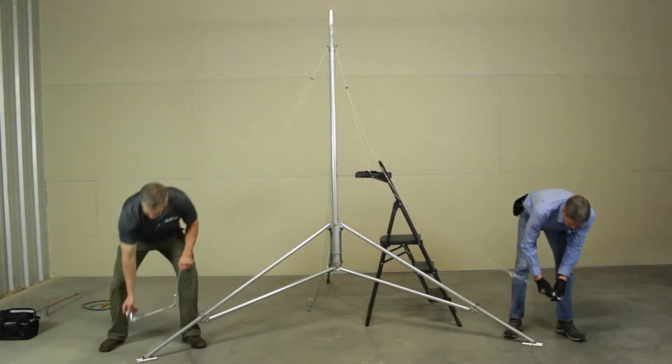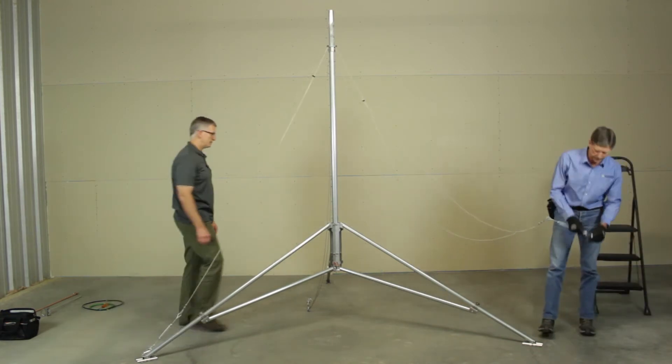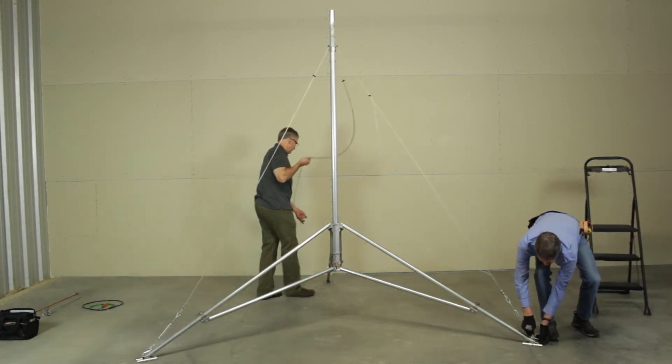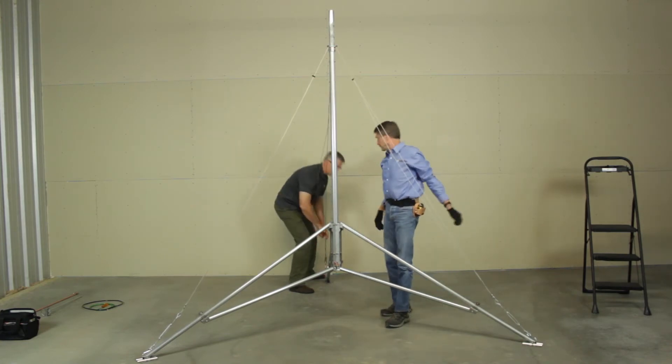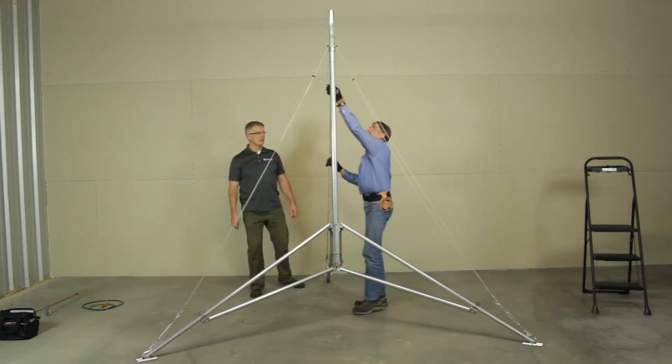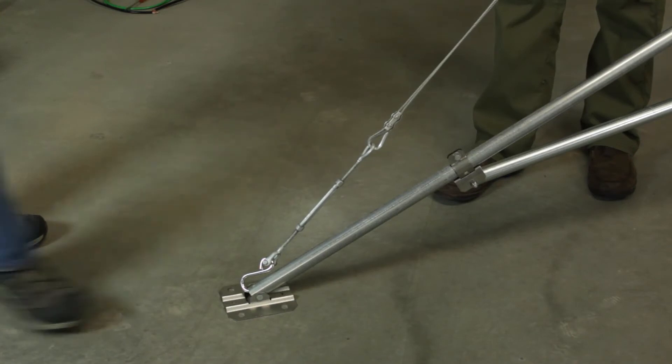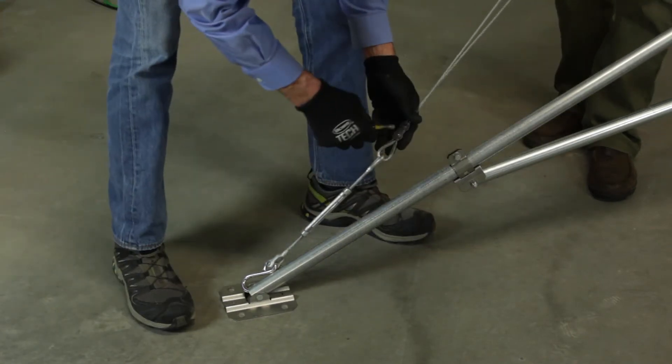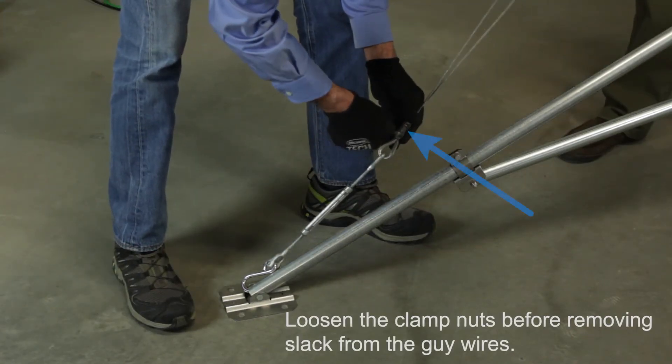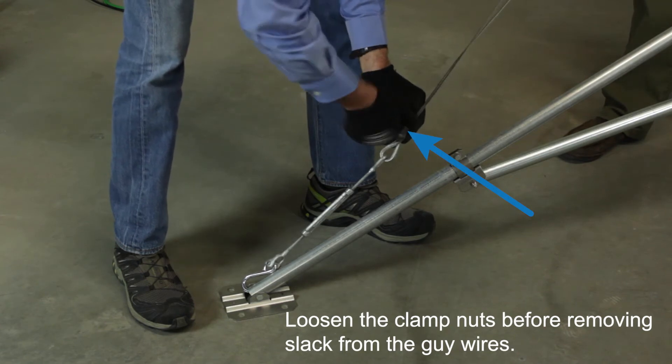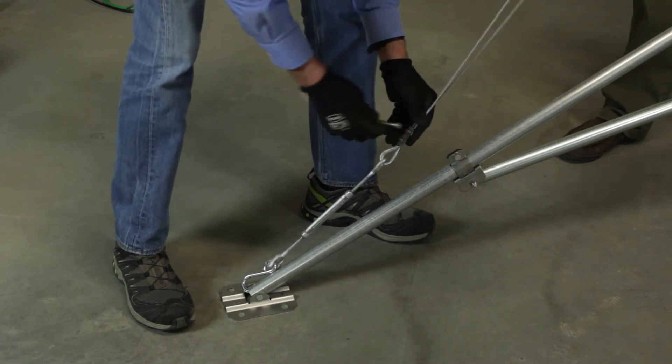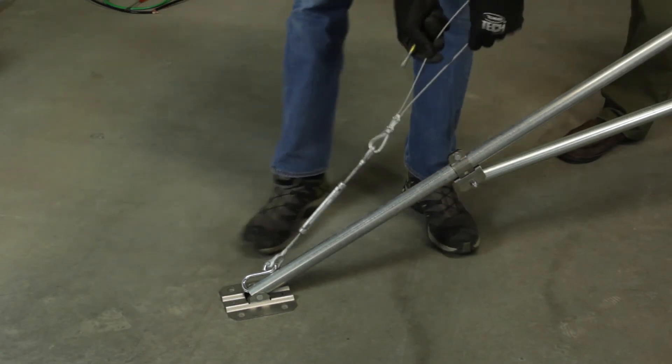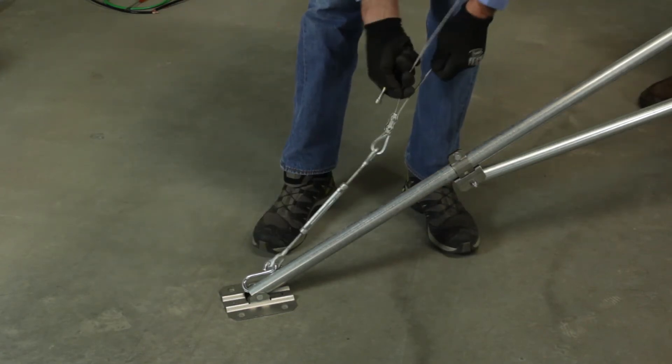Hook the bottom end of each guy wire into the corresponding leg and pull on the loose end to remove any slack in the cable.